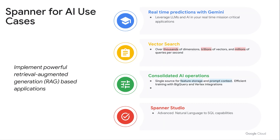The fourth use case is leveraging Spanner for AI. We all know that LLMs hallucinate, but Spanner enables application developers to ground their LLMs in operational data. With Spanner Predict, you can run complex machine learning models directly on your live operational data, enabling real-time predictions, personalized experiences, and intelligent decision-making from within Spanner. With vector search, you can find similar items, recommend products, or power semantic search — Spanner's vector search capabilities efficiently search through high-dimensional vector embeddings, unlocking similarity-based applications directly on your Spanner data.